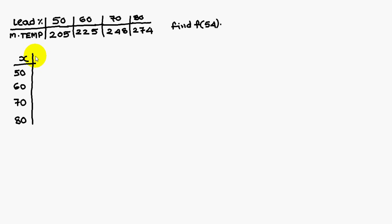You write the lead percentage column wise, similarly melting temperatures column wise. Next what you have to do, you have to get the differences of these two numbers: 225 minus 205 that is 20, similarly 248 minus 225 that is 23, 274 minus 248 that is 26.